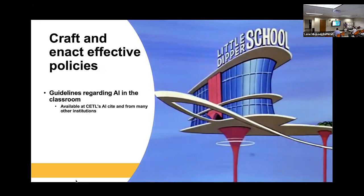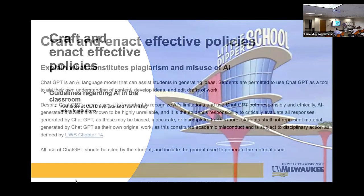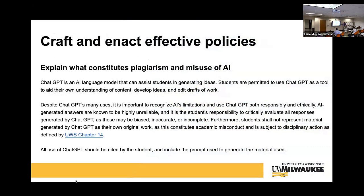So what are some things we can do to craft and enact effective policies? Talking to students, but also being very clear about what constitutes cheating in your classroom. A common question is: what is a syllabus statement I can put up for students in regard to AI in the classroom, what's ethical use? We have some of those — available at CEDL's website. I think you should think of them as suggestions because the learning objectives of your individual course are slightly different. The use of AI in that course and what constitutes plagiarism is going to be slightly different. Explain to students what your policy is regarding AI — have a clear policy tailored to the learning objectives of your course.